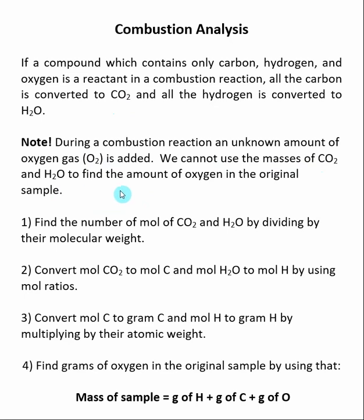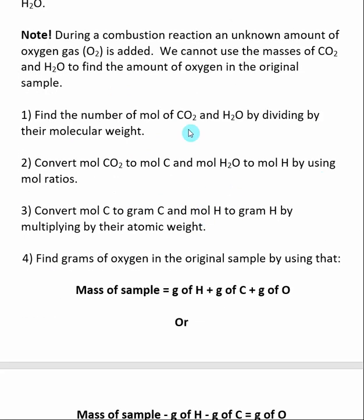In the first step of a combustion analysis, you want to find the number of moles of CO2 and H2O produced by dividing by their molecular weight. Once you've done this, you then find the number of moles of carbon and the number of moles of hydrogen by using the molecular formulas of CO2 and H2O, respectively. We then convert moles to grams to find the grams of carbon and grams of hydrogen produced during the combustion, by multiplying by their atomic weight.